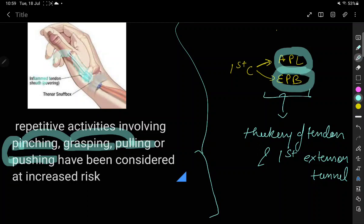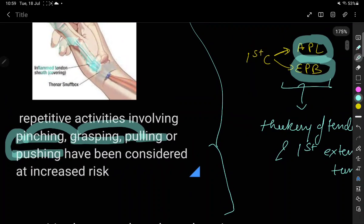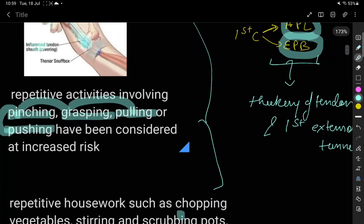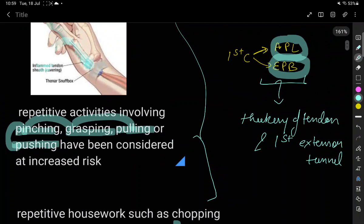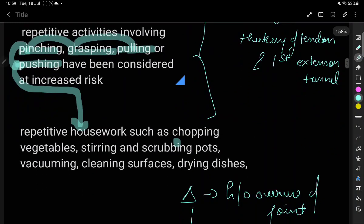These tendons are involved in abduction and extension of the thumb. These actions are commonly done in household work like chopping, which requires grasping the knife and then pushing on it and also requires extension at times.